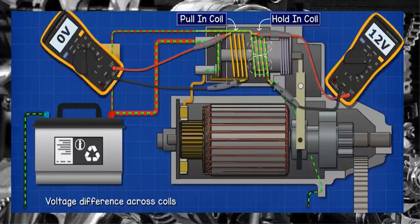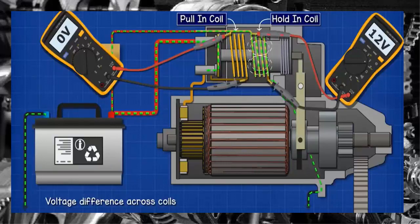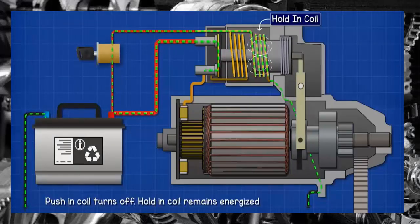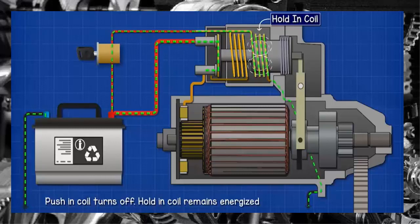There will be no voltage difference across this coil at that point in time, so the coil will turn off because there's no current flowing through it. It takes far less energy to hold the piston in position, so the hold-in coil continues to run.